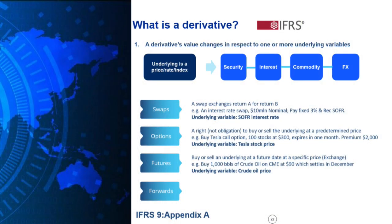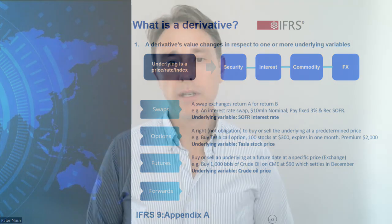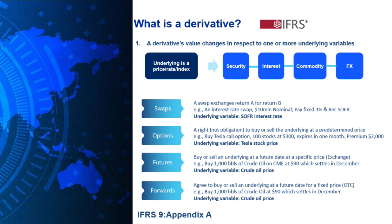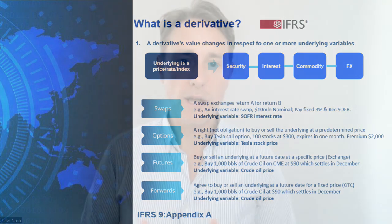When it comes to futures and forwards, let's look at futures first. Futures are where you're buying and selling an underlying at a future date at a predetermined price, and these are traded on an exchange with a central counterparty. For instance, we're going to buy 1,000 barrels of crude oil on the CME at a price of $90, and this contract settles in December — so the underlying variable is the crude oil price. Forwards are the same, except they're settled on a bilateral basis between two counterparties in the over-the-counter market, not traded on an exchange.